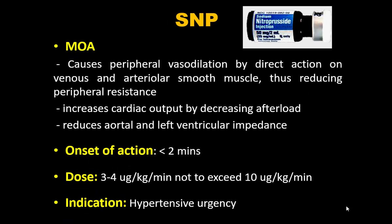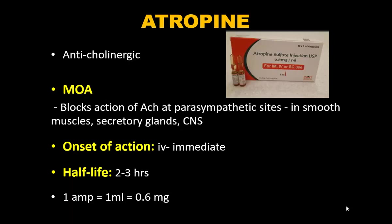Sodium nitroprusside causes peripheral vasodilation by direct action on venous and arterial smooth muscles, reducing peripheral resistance and increasing cardiac output by decreasing afterload. Onset is less than 2 minutes. It is a photosensitive drug — must be covered and stored in dark. Dose: 3–4 mcg/kg/min, not exceeding 10 mcg/kg/min. Indication: hypertensive emergencies.